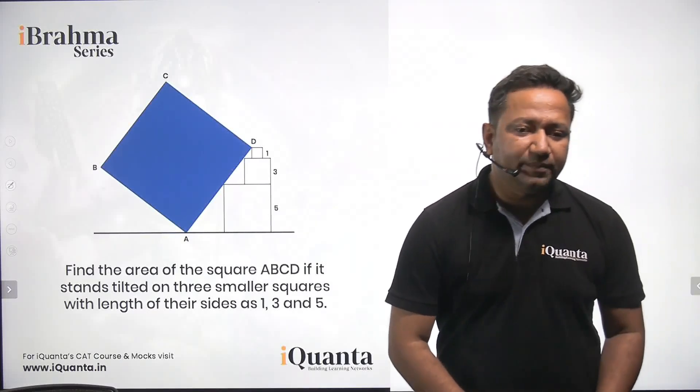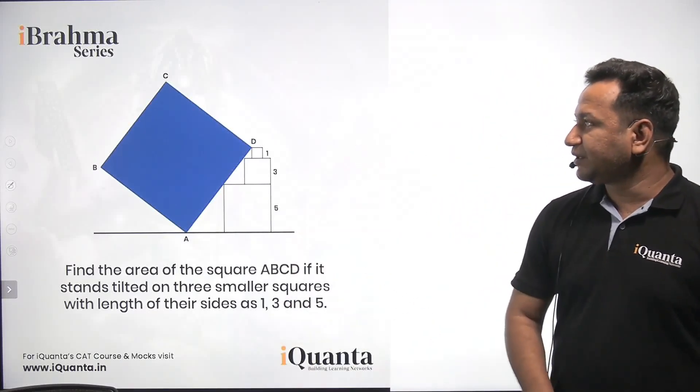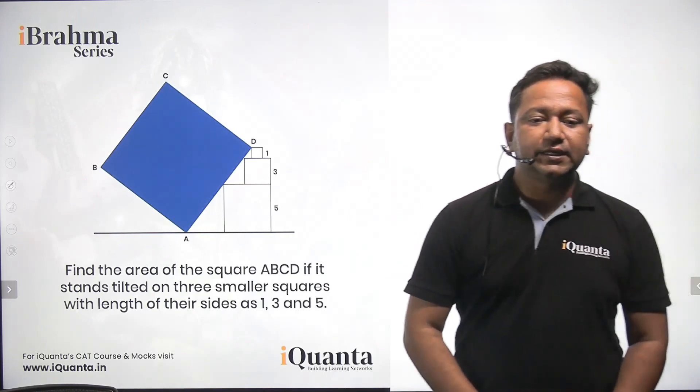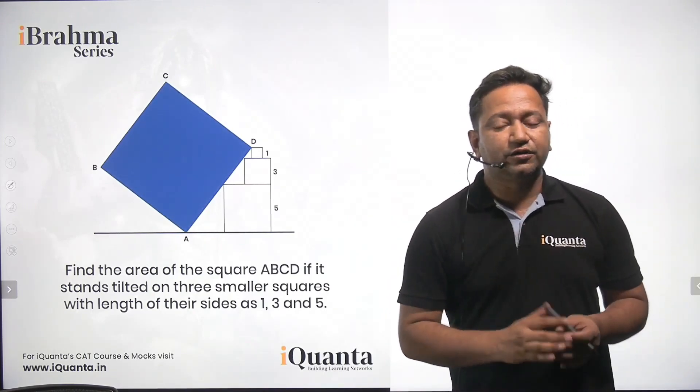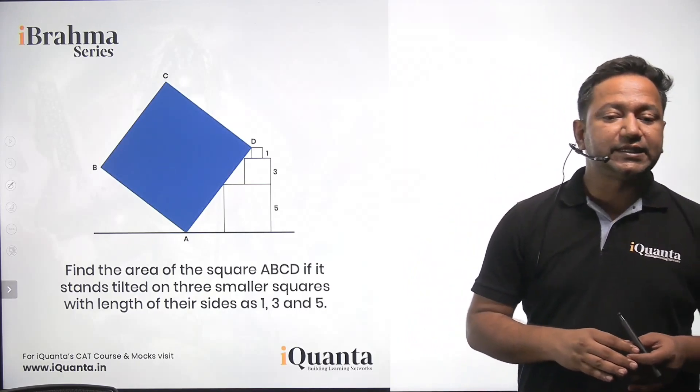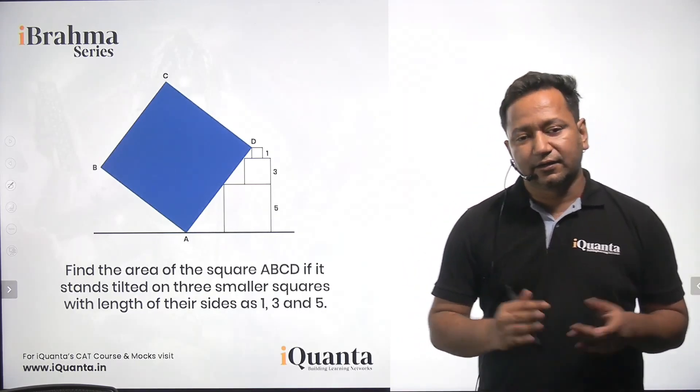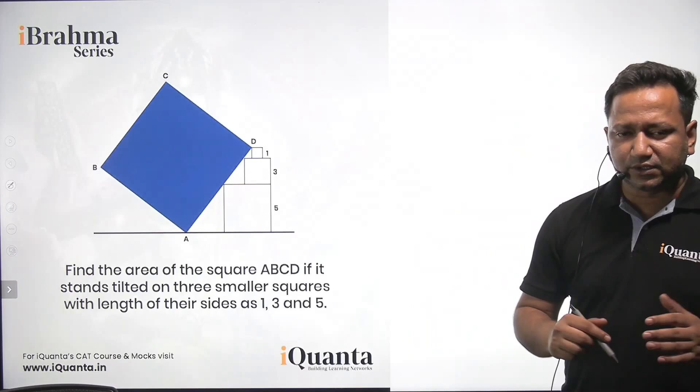Welcome to iQuanta. Today we'll be discussing a very interesting question of geometry from Ibrahma series. It says find the area of the square ABCD if it stands tilted on three smaller squares with length of their sides as 1, 3 and 5 units. So let us solve this.